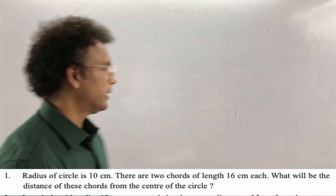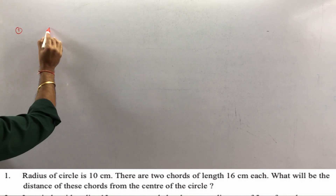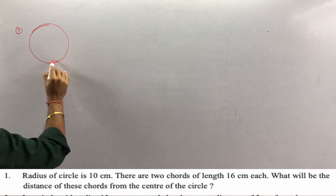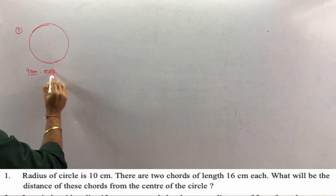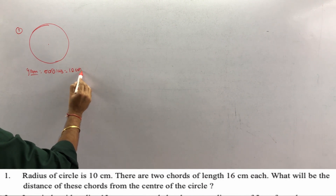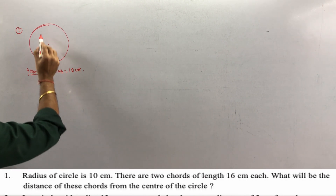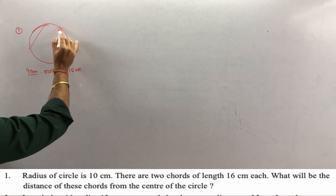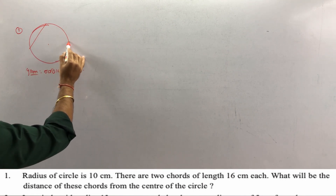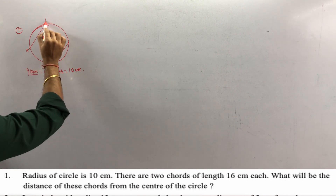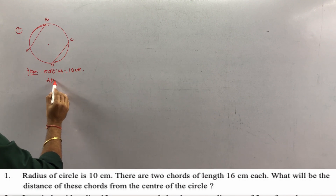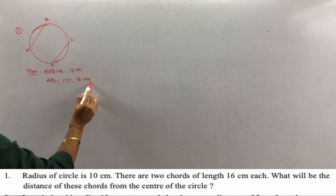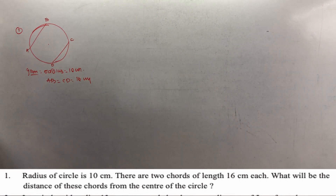Now check exercise 6.2. The radius of a circle is 10 centimeters. Please pay attention — there are only two sums. There are two chords of length 16 centimeters each, meaning both chords are congruent. We draw chord AB and chord CD, so AB is equal to CD, which equals 16 centimeters. What will be the distance of this chord from the center?